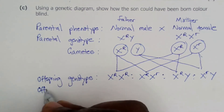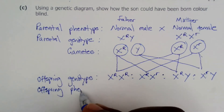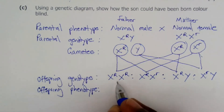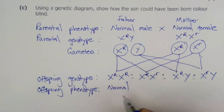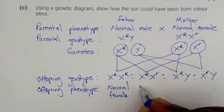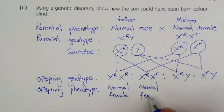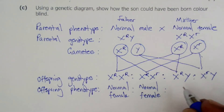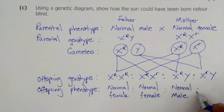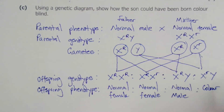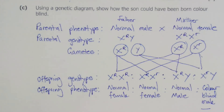The fifth step is to show the offspring phenotypes. The first offspring is a normal female; the second is a normal female who is a carrier; the third is a normal male; and the fourth is a colorblind male. This is how we show that the son would be born colorblind using a genetic cross. These were the solutions to question number five for Biology Paper 2 2020 for GCE candidates.